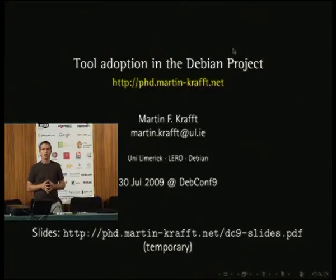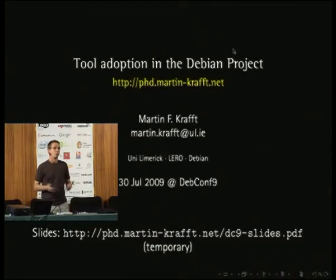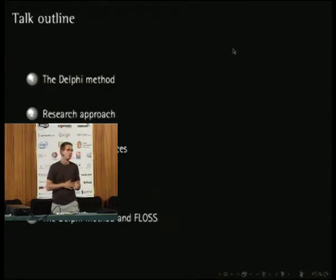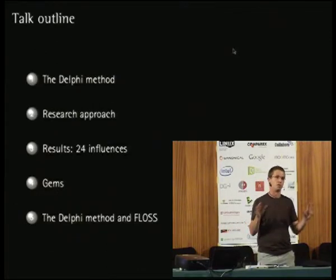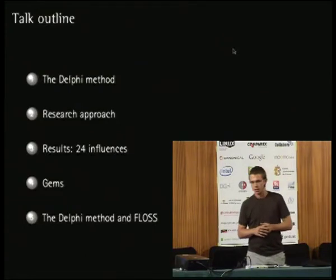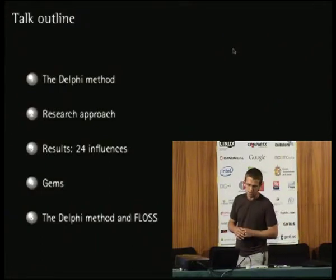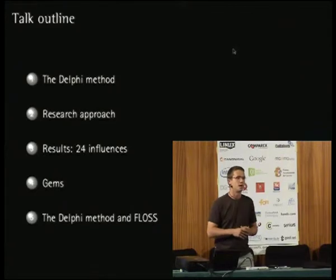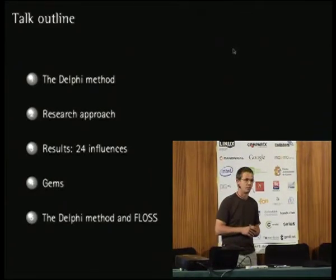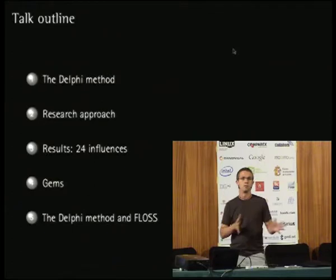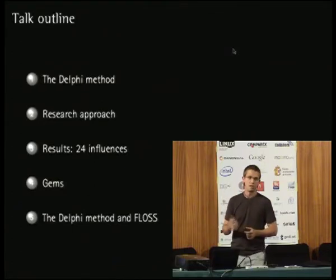What I'm looking at and what I'm interested in is finding out what makes you choose a new tool, or what makes you reject a new tool and not adopt it. First of all, I want to give you an introduction to the method I used for the research. I'll give you a general overview of what I did, then present the results — 24 influences that I found — and if we have time, a couple of gems, nice quotes and smart things that have been said. Then I'll end with talking about the role the Delphi method could play in a FLOSS project, specifically the Debian project.